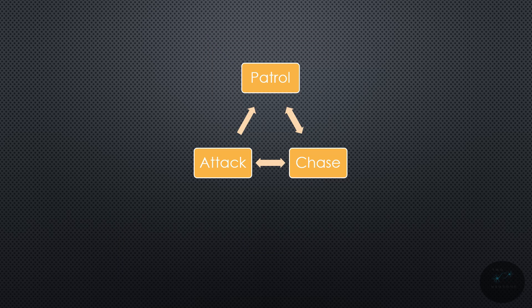So, let's take our original model of the patrol, chase, attack. Let's say for a moment they hear a noise. So we go from patrol to search, or they lose sight of the enemy and we don't want them to go back to patrol to begin with, but start searching. Then, we have a new branch to our finite state machine.